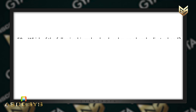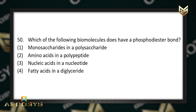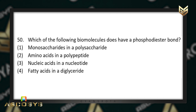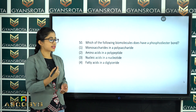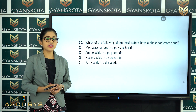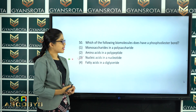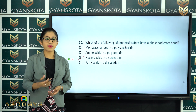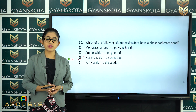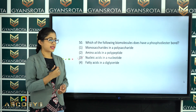The next question is question number 50. Which of the following biomolecules does not have a phosphodiester bond? Monosaccharide in a polysaccharide, amino acids in a polypeptide, nucleic acids in a nucleotide, or fatty acid in a diglyceride? From the chapter Biomolecules, the question asks which does have a phosphodiester bond — that is option number 3, nucleic acids in a nucleotide. You can also refer to the chapter Molecular Basis of Inheritance for the structure of DNA and RNA.